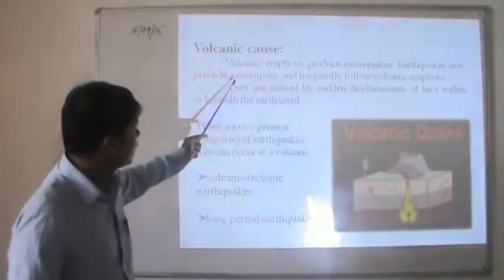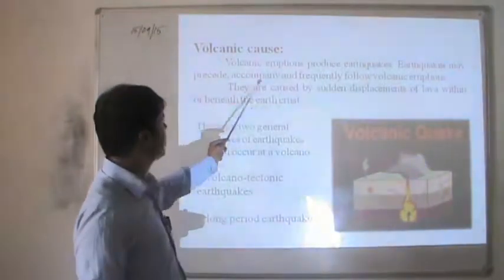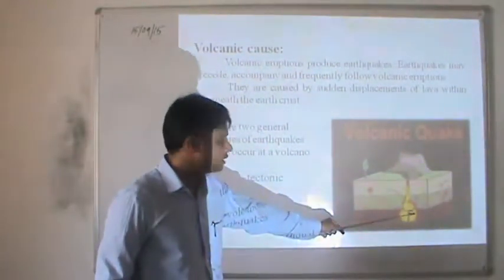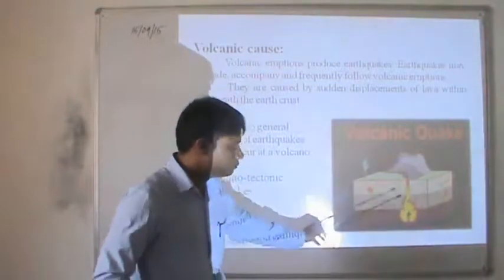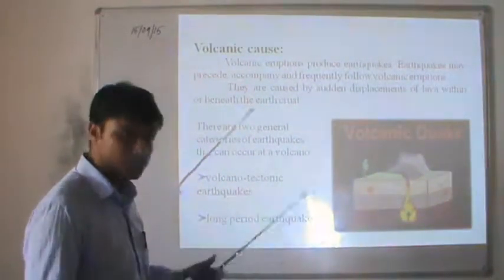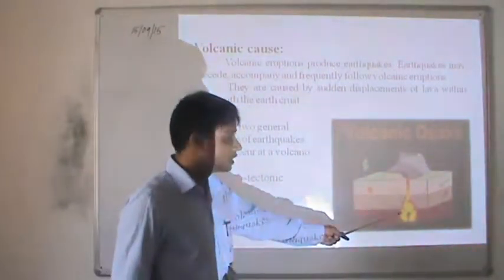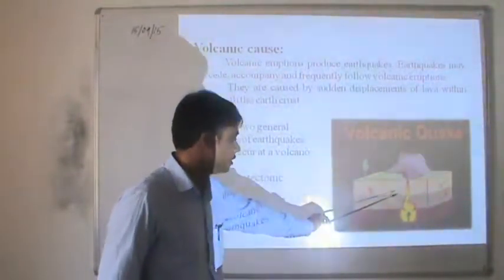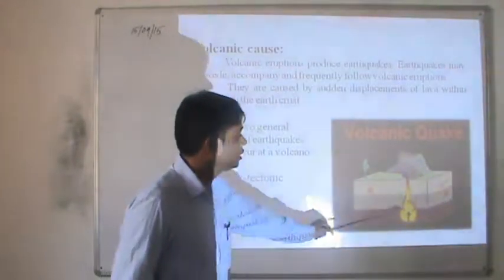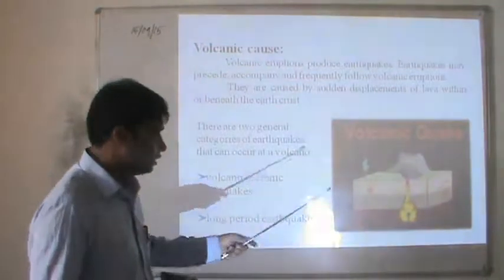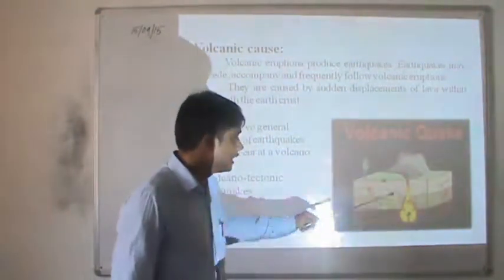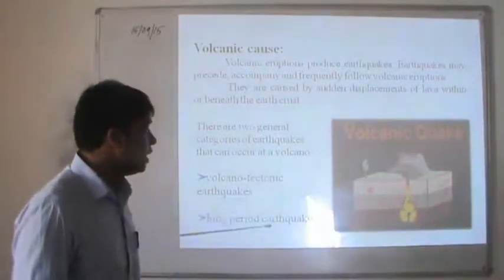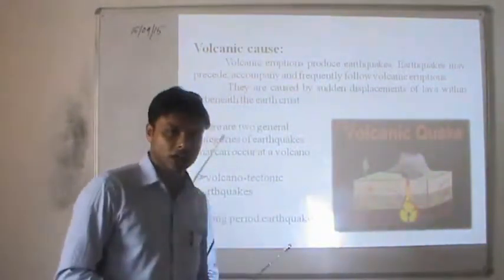Volcanic eruptions produce earthquakes. Earthquakes may precede and frequently follow volcanic eruptions. When there is a volcanic eruption, pressure from the liquid magma inside creates fractures along the soil, producing the volcano. The magma travels through channels to volcanic areas where it blasts out as lava, and the fractures produced trigger earthquakes in that region.